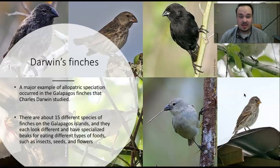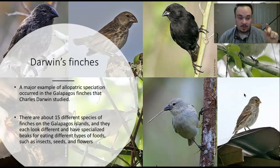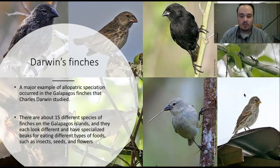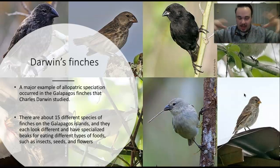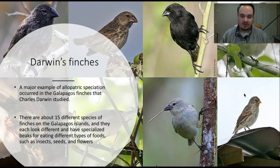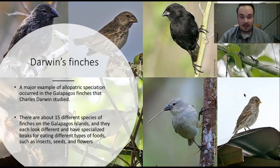A great example of allopatric speciation is Darwin's finches. There are about 15 different species of finches on the Galapagos Islands. It's theorized that one species landed on one of the islands, then radiated out to all the others, each becoming specialized to its specific island with different beak shapes suited to insects, seeds, or flowers. When one species blossoms into many like this, it's called adaptive radiation — one species becomes many, each filling a very specific niche.